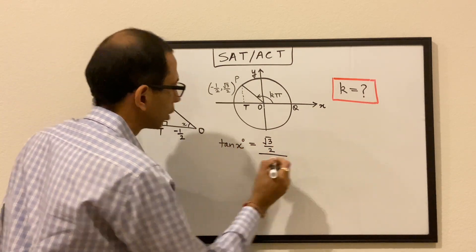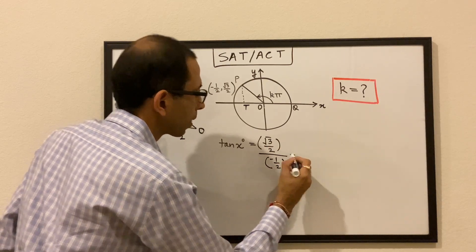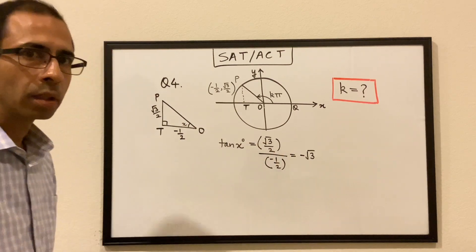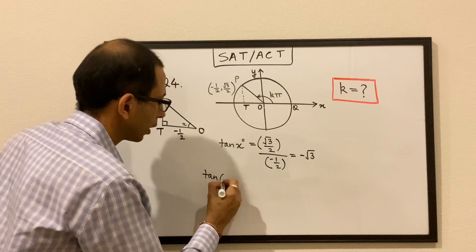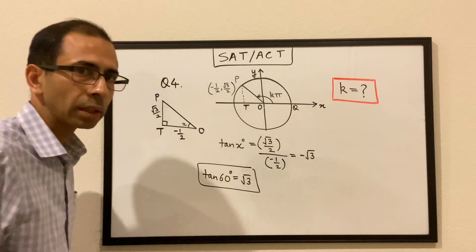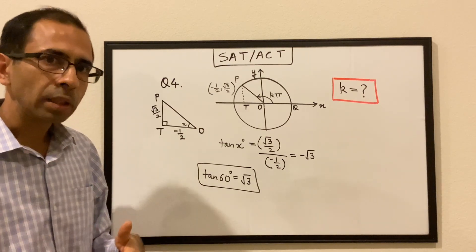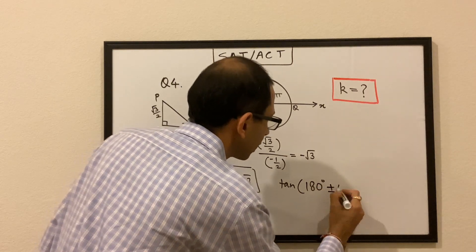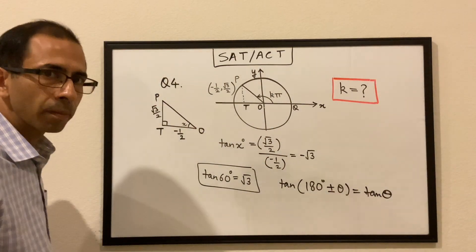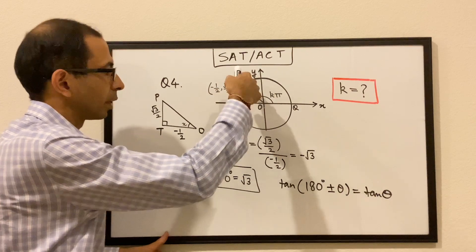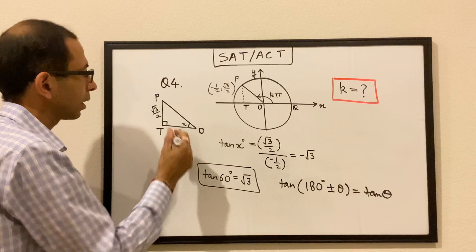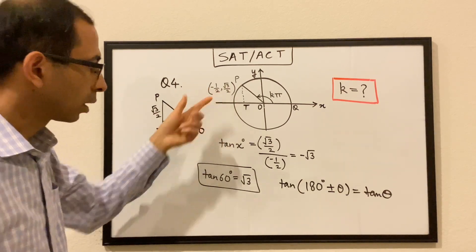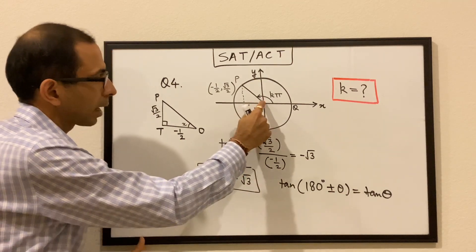We can use tan since we have the opposite and the adjacent. Let this angle be x, so tan(x) = opposite over adjacent = (√3/2) ÷ (−1/2) = −√3. We know tan(60°) = √3. We also know tan(180° ± θ) = tan(θ). We are in the second quadrant, where tan is negative because the adjacent is negative, so tan is negative in the second quadrant.